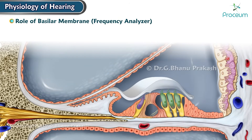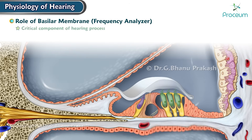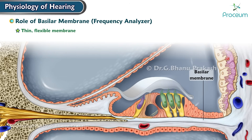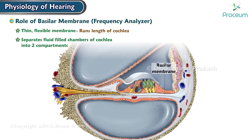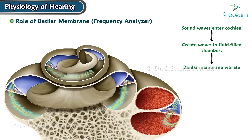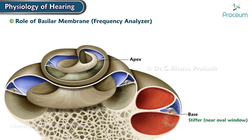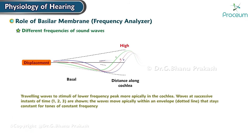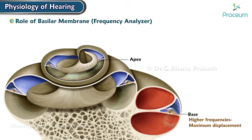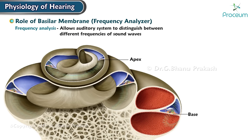The basilar membrane is a critical component of the hearing process, playing a vital role in frequency analysis of sound waves. It is a thin, flexible membrane running the length of the cochlea, separating the fluid-filled chambers into two compartments. The basilar membrane is stiffer at the base of the cochlea near the oval window and becomes more thin and flexible towards the apex. As a result, different frequencies cause maximum displacement at different points, with higher frequencies causing maximum displacement near the base and lower frequencies near the apex, allowing the auditory system to distinguish pitch.